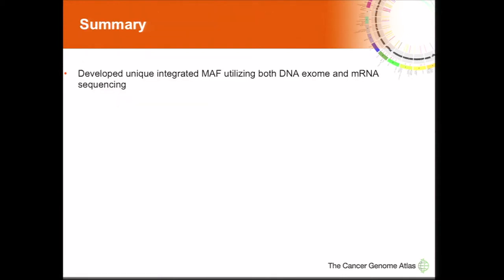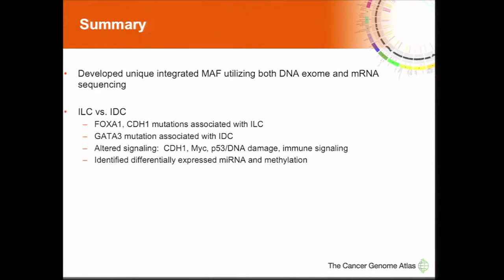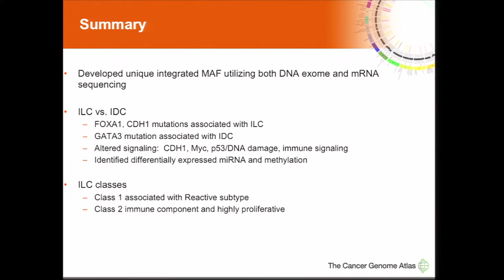In summary, we developed a unique integrated MAF utilizing both DNA exome sequencing and mRNA sequencing to identify variants in ductal and lobular tumors. Comparing ductal versus lobular, FOXA1 and CDH1 mutations, as well as GATA3 underexpression, are associated with lobular tumors, while GATA3 mutations are found specifically in ductal patients. We see altered signaling of a number of pathways and have identified differentially expressed microRNA and methylation patterns. Within lobular classes, class 1 is associated with a reactive stromal subtype and class 2 has a strong immune component.